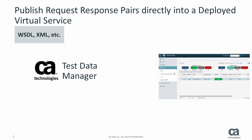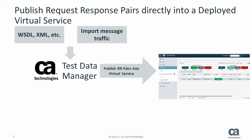Service virtualization on demand: create request/response pairs directly into a deployed virtual service. Using CA TDM, we can generate request/response pairs based on the specification of the WSDL, JSON request, XML, etc. We can also sample the message data, which is very useful. We start by taking your WSDL or XML, registering it into the data maker engine, and possibly importing some message traffic, which can be useful for analyzing the traffic flowing through a system. Out of that, we create these request/response pairs which are then pushed directly into the SV product.